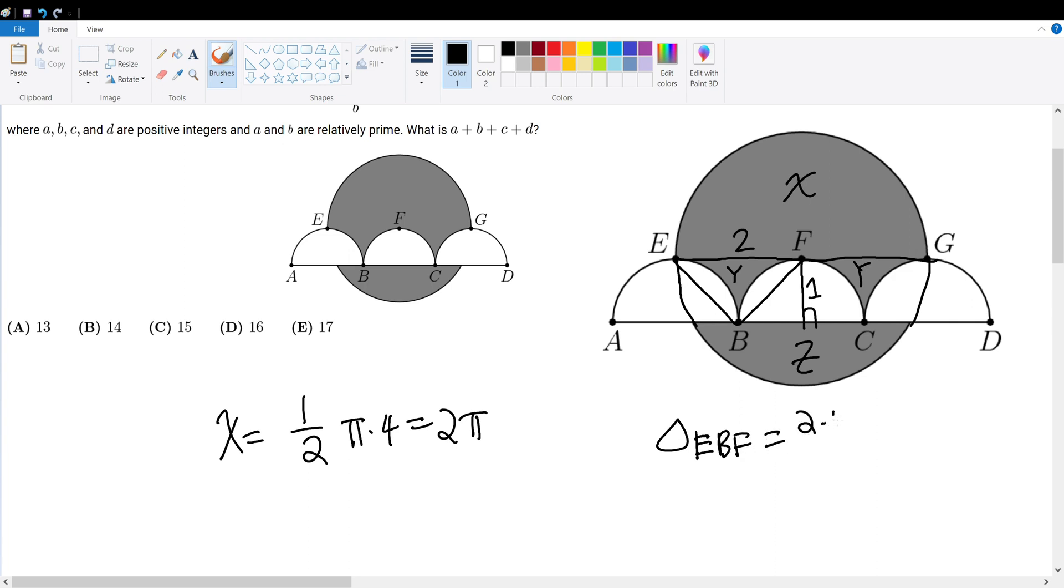EBF will just be 2 times 1 divided by 2, which gives you 1. But what about that pesky little white region right here? Well, that region can be broken down into a quarter circle subtracted from a right triangle. So that's equal to this entire figure's area minus this area.